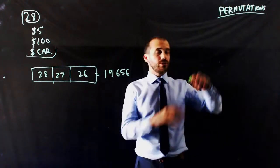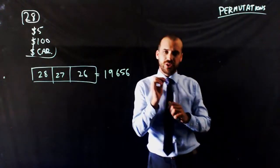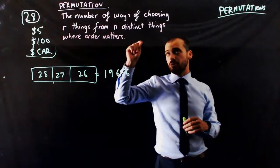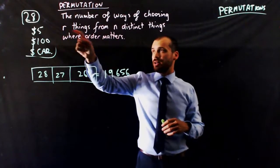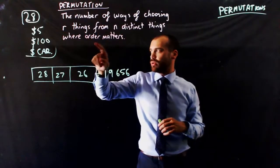This is called a permutation and I'm going to put up a really formal definition of what a permutation is. It's the number of ways of choosing r things from n distinct things where order matters.